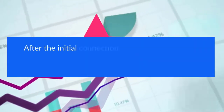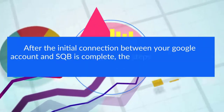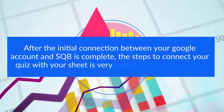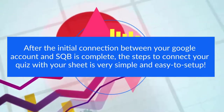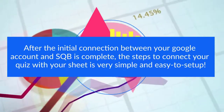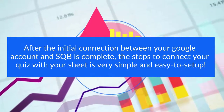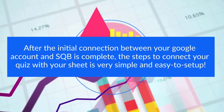Once you connect it, after that it's super simple. All you have to do is enter the sheet URL in your quiz setup and SQB will directly add all the details, quiz results, and everything else directly to your sheet. You can continue using Zapier or whatever else you're using right now, but if you want direct integration, then you can follow these steps.